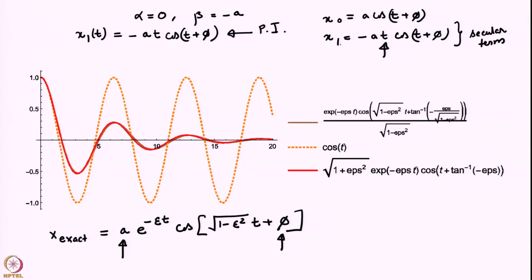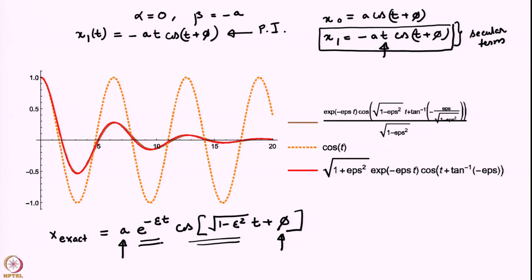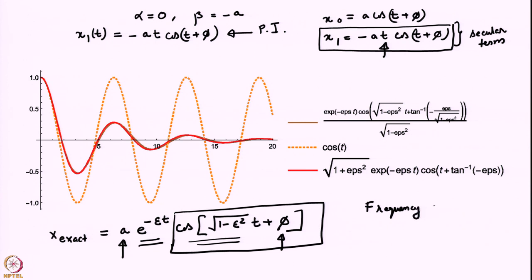Looking at the oscillatory part, the frequency √(1 − ε²) depends on epsilon — it is not independent of epsilon. As you change epsilon the frequency keeps changing, so this is not exactly a time-periodic system because the amplitude does not return to its original value. But it is an oscillatory system, and the gap between zero crossings actually depends on epsilon. This is the same feature encountered earlier in the non-linear pendulum, except there it was exactly periodic.